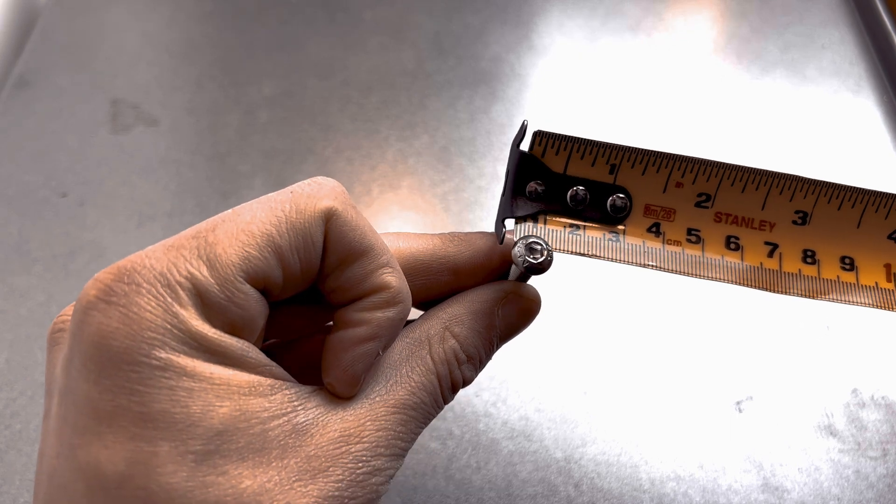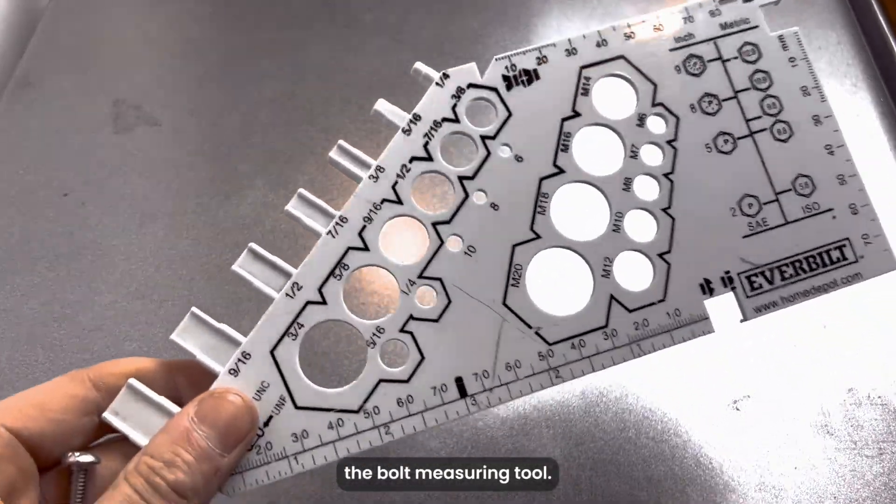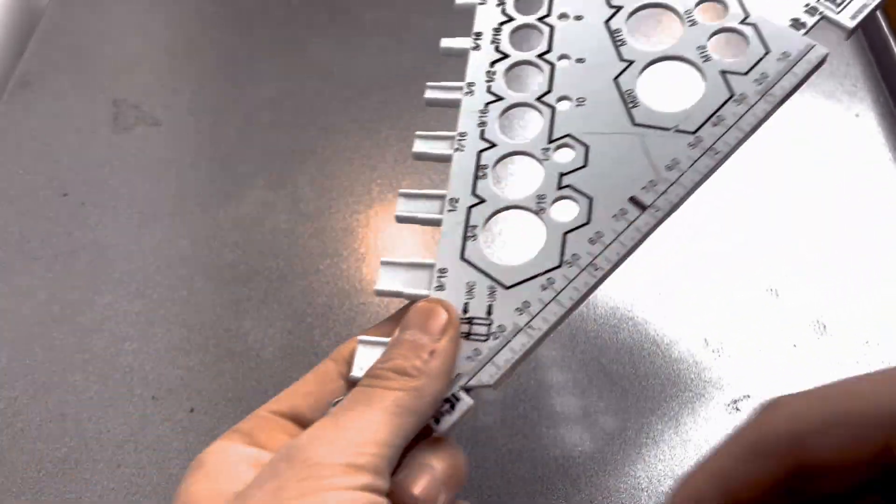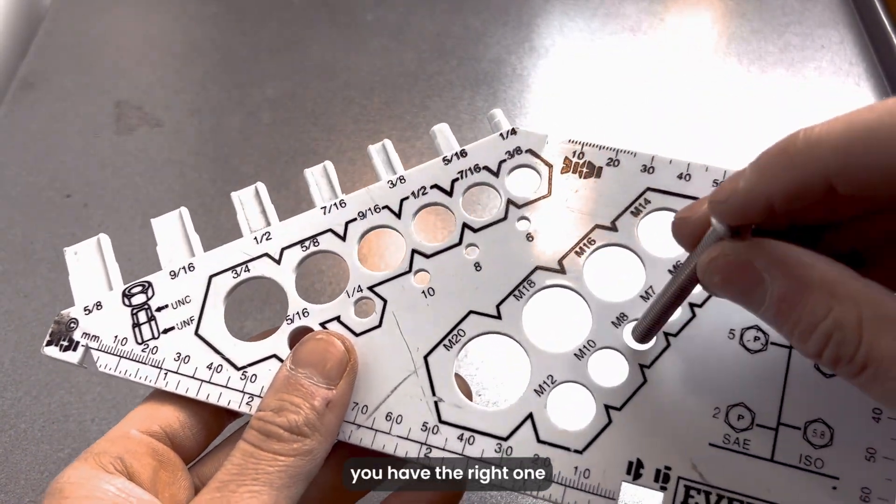Next we use the bolt measuring tool. For the width, there are several slots you can put the bolt through. You'll know you have the right one when it doesn't wiggle around too much like this.